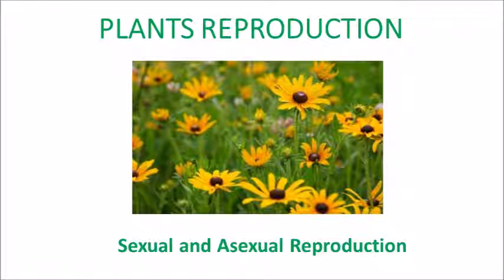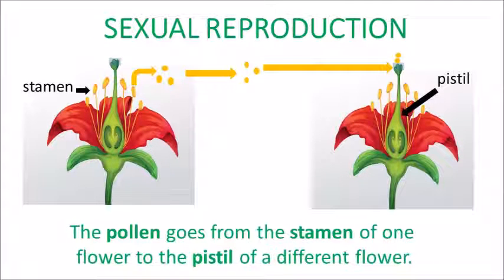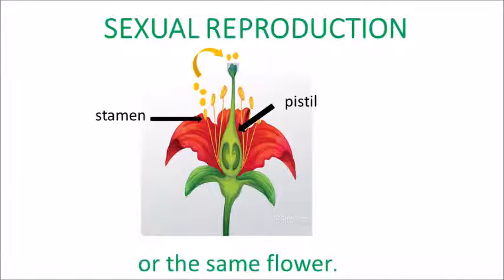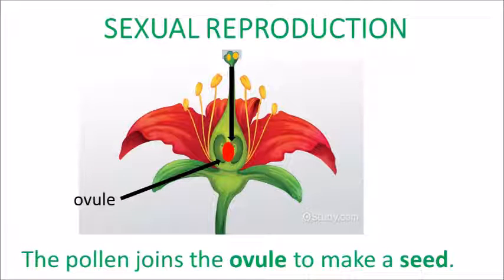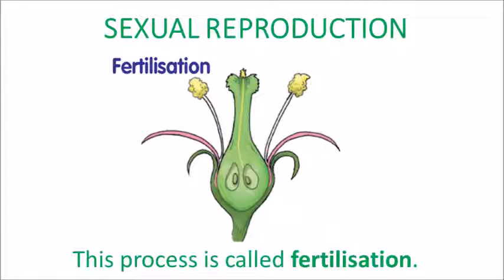Plant reproduction. Plants reproduce in two ways: sexual and asexual reproduction. In sexual reproduction, the pollen goes from the stamens of one flower to the pistil of a different flower or the same flower. After that, the pollen joins the ovule to make a seed. This process is called fertilisation.